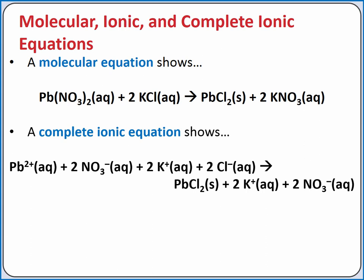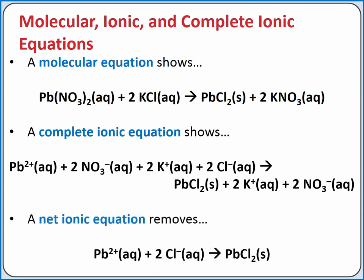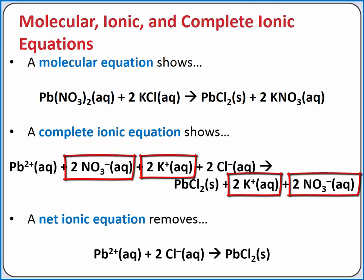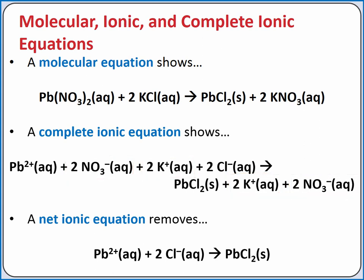A third way to represent the reaction is using the net ionic equation, which removes spectator ions. Spectator ions do not participate in the reaction, so they show up exactly the same on both sides of the complete ionic equation. Potassium and nitrate are spectator ions in this reaction, so they are removed to produce the net ionic equation, which is the reaction of lead-2+ with chloride to produce lead-2-chloride.